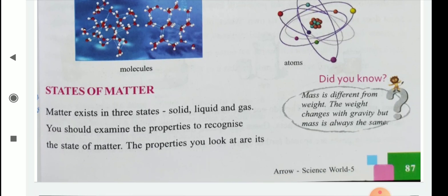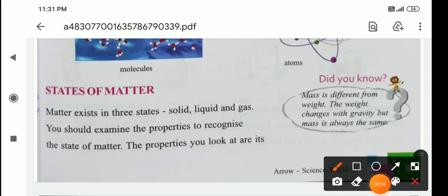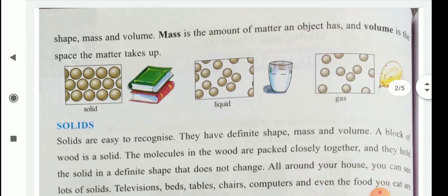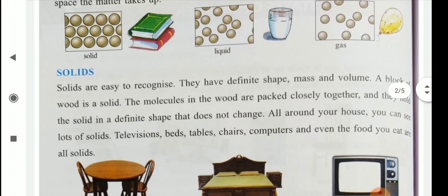Then states of matter. So then you know there are three states of matter. Solid, liquid and gas. First we discuss about solid. Solids are easy to recognize. They have definite shape, mass and volume.